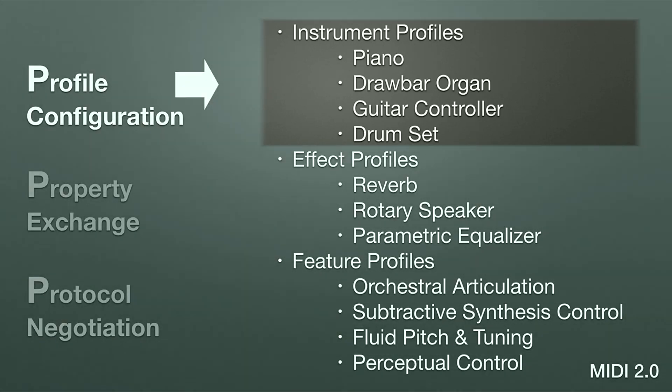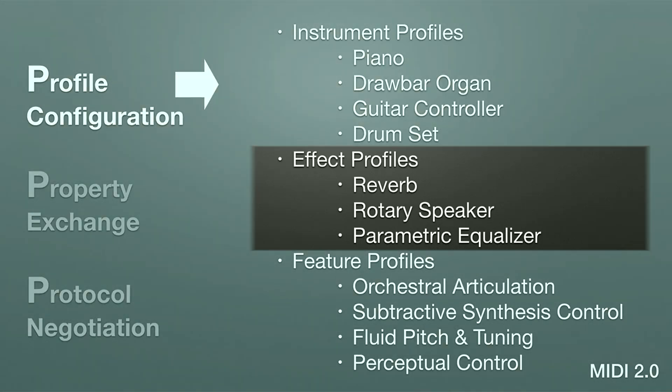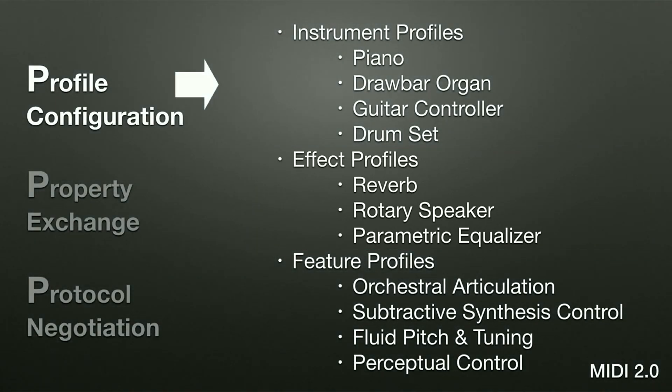Through MIDI CI, we ask 'do you support the drawbar organ profile?' and then enable it once we confirm the device supports it. There are three different profile types: instrument profiles — covering acoustic pianos, organs, electric pianos, drum sets, and so on; effects profiles for all kinds of effects; and feature profiles, such as orchestral articulation or a pitch profile for microtonal tuning. A DAW could ask a synthesizer what profiles it supports and then automatically configure and map controllers for that profile type.